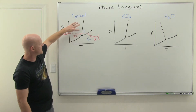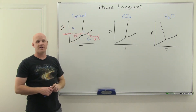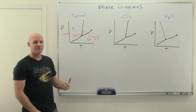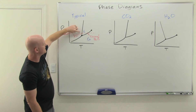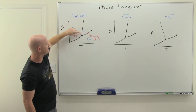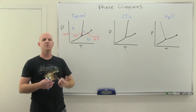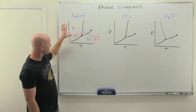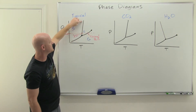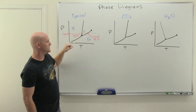When you are on one of these lines, you're at the phase transition temperature, so you actually have two phases in equilibrium together. Anywhere along the solid-liquid line you have the solid and liquid phase together in equilibrium. As a result, we call these lines the lines of equilibrium: the solid-liquid line of equilibrium, the liquid-gas line of equilibrium, and the solid-gas line of equilibrium.